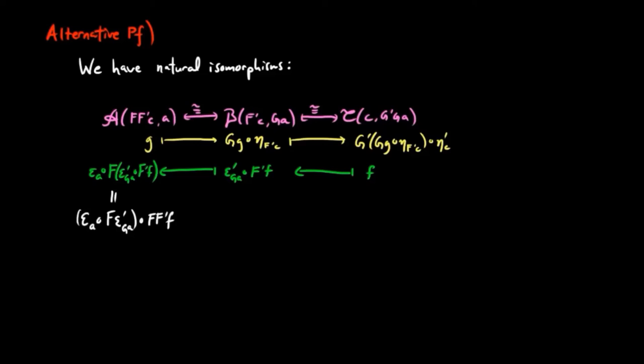And then also G prime composed with GG eta F prime C eta prime C equals G prime GG composed with G prime eta F prime C eta prime C. Therefore, since the isomorphism from left to right is natural and acts by pre-composition of G prime eta F prime eta prime, we must have this as a unit.